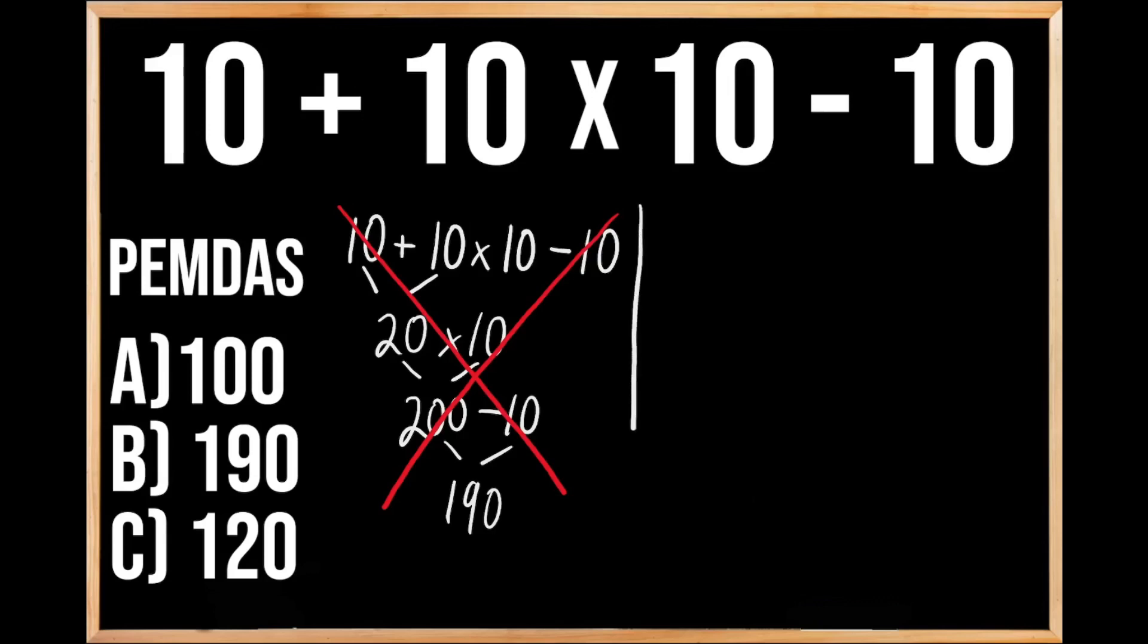So let's go ahead and work through this problem together, except this time we're going to make sure that we're following the order of operations. The original problem was 10 plus 10 times 10 minus 10.